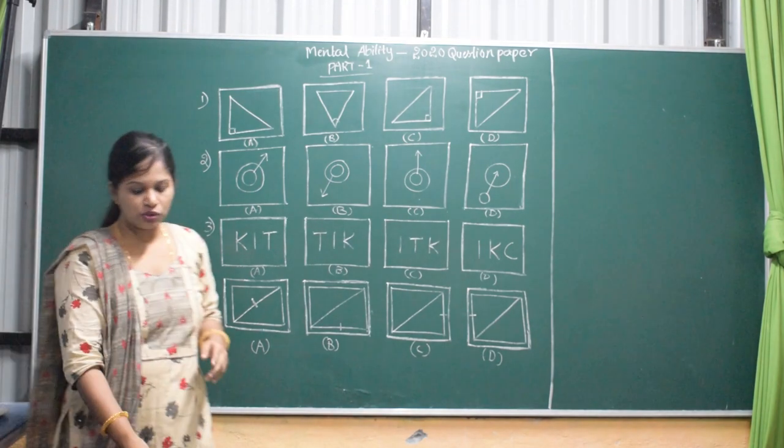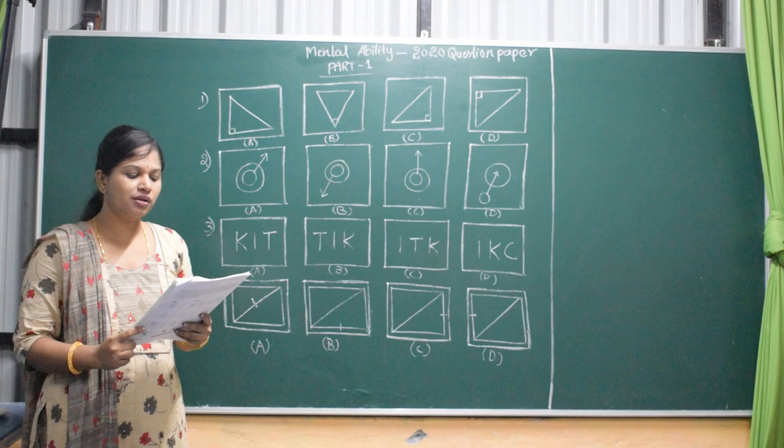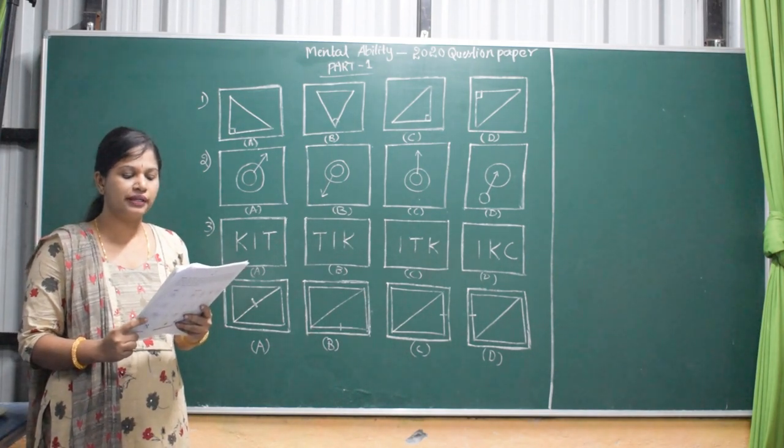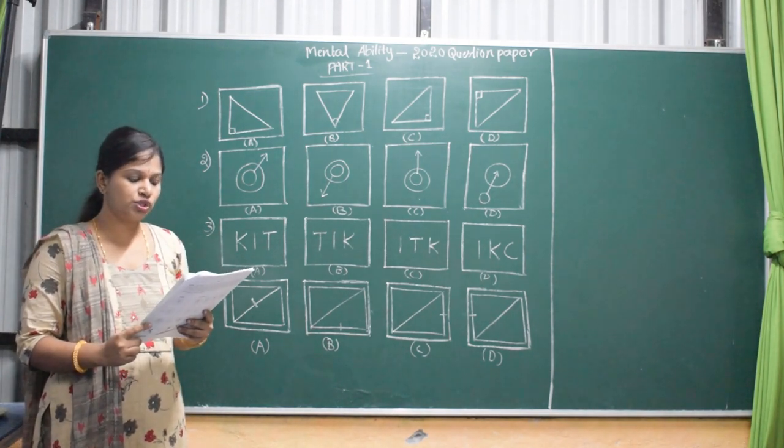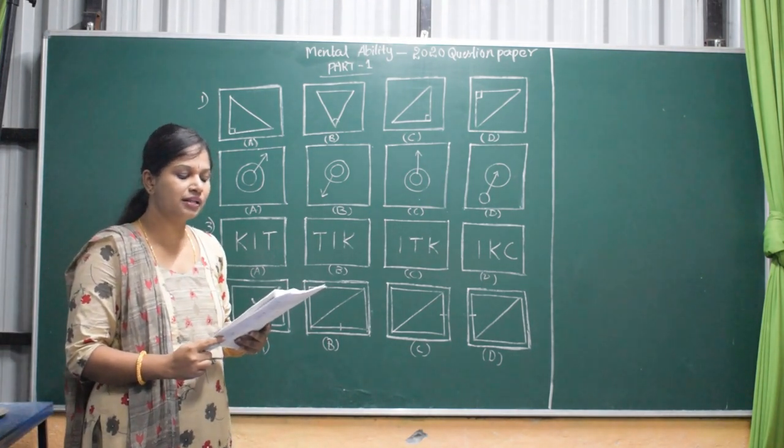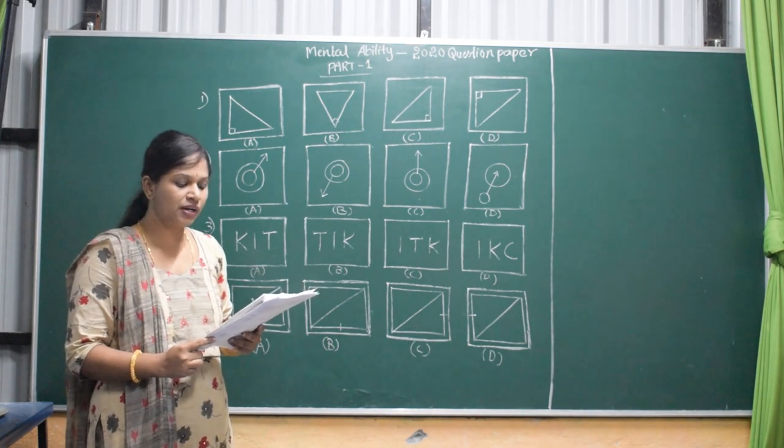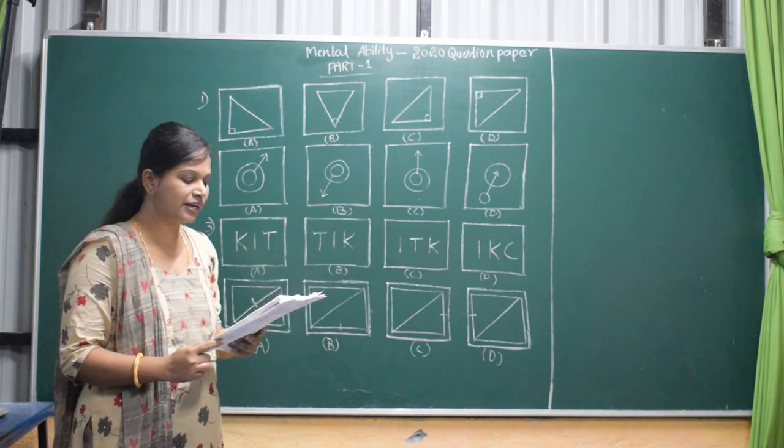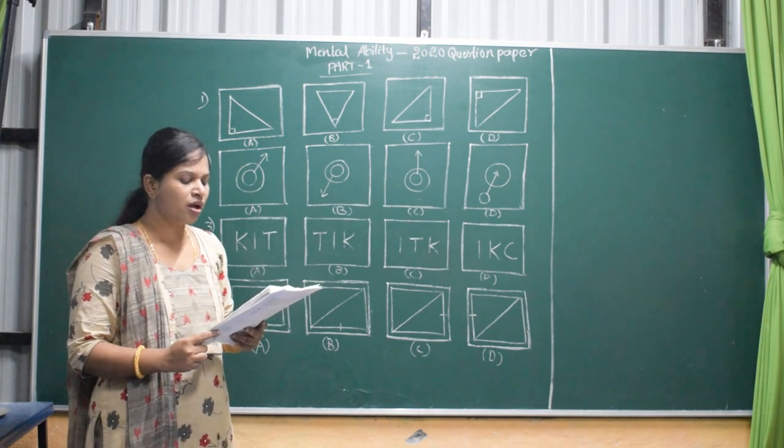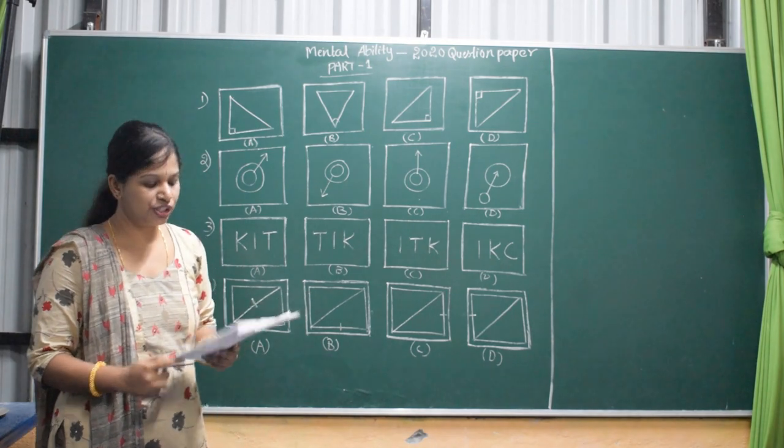Let's start the question. Your directions are here. In question numbers 1 to 4, figures A, B, C, and D have been given in each question. Of these 4 figures, 3 are similar in some way and 1 figure is different. Select the figure which is different and write your answer only in English letters A, B, C, and D in the box against the number corresponding to the question in the answer sheet.